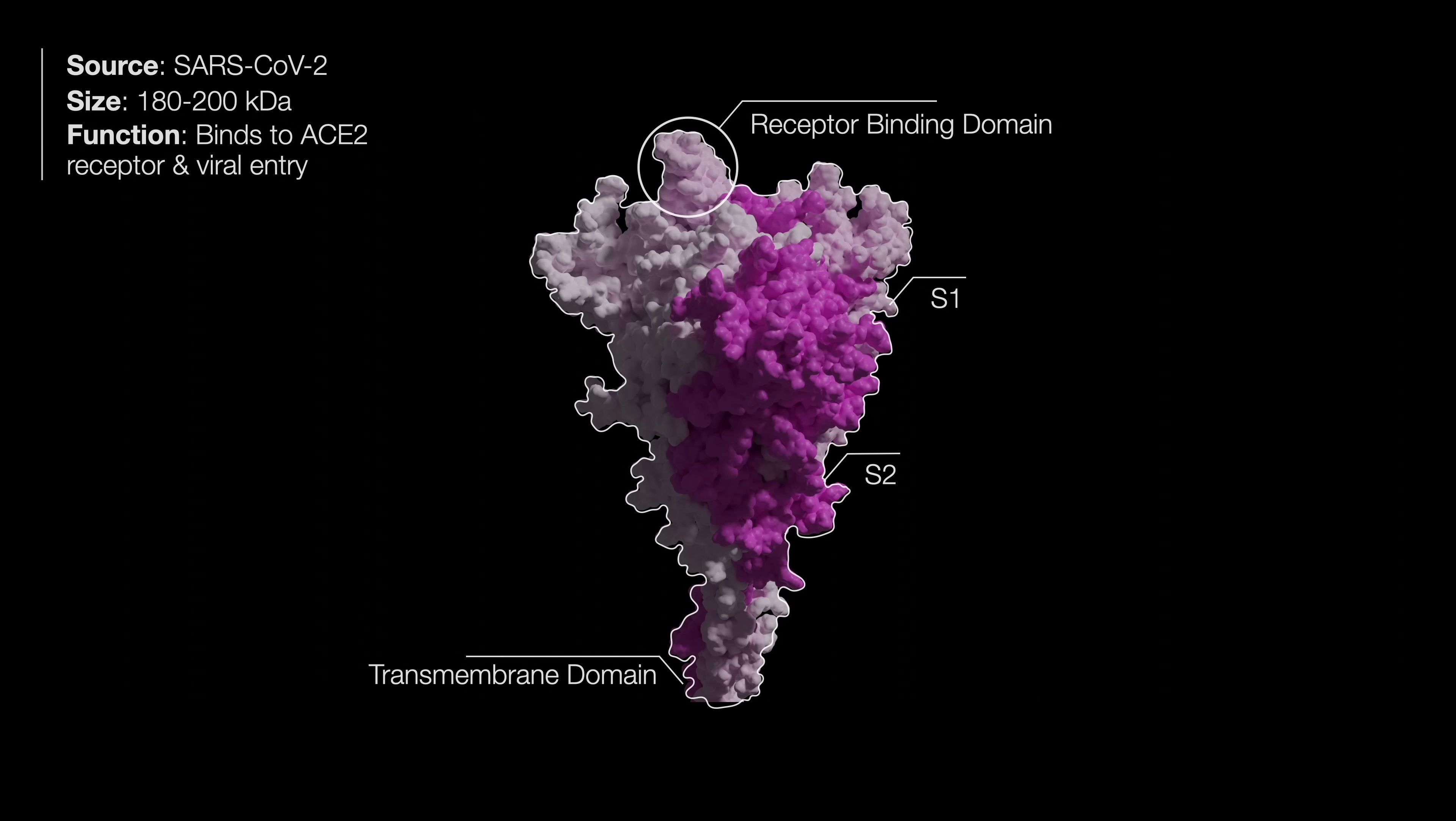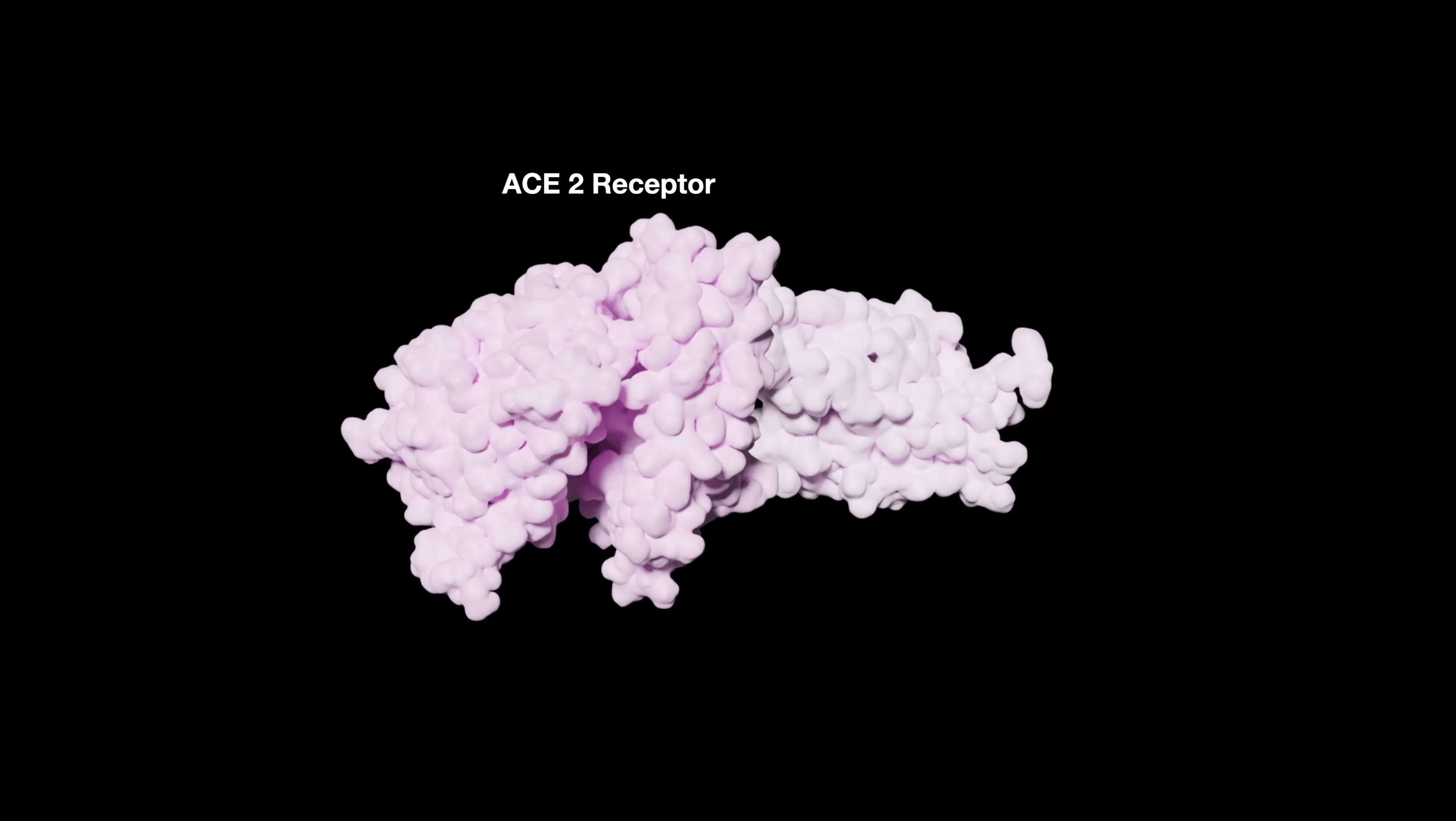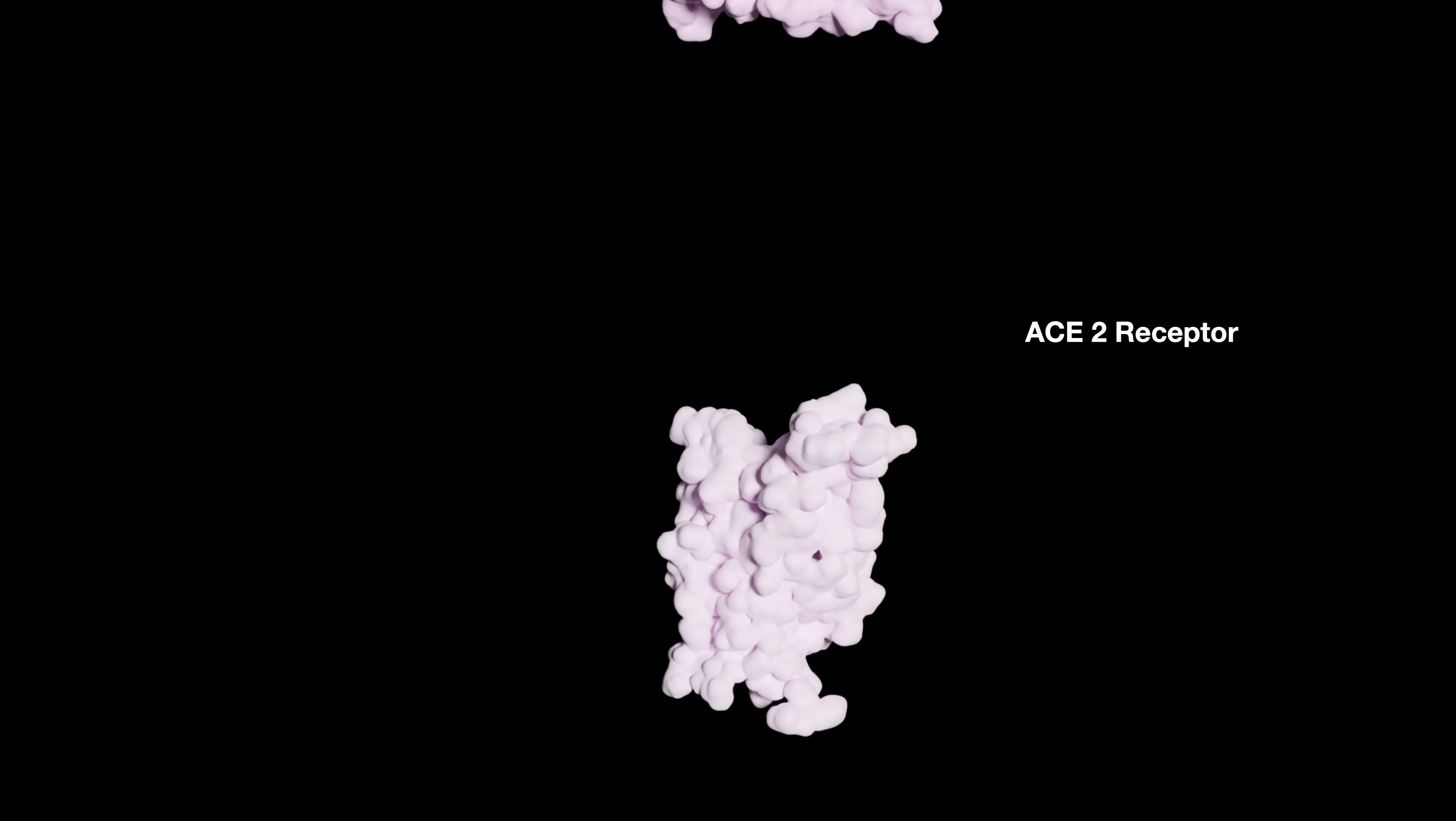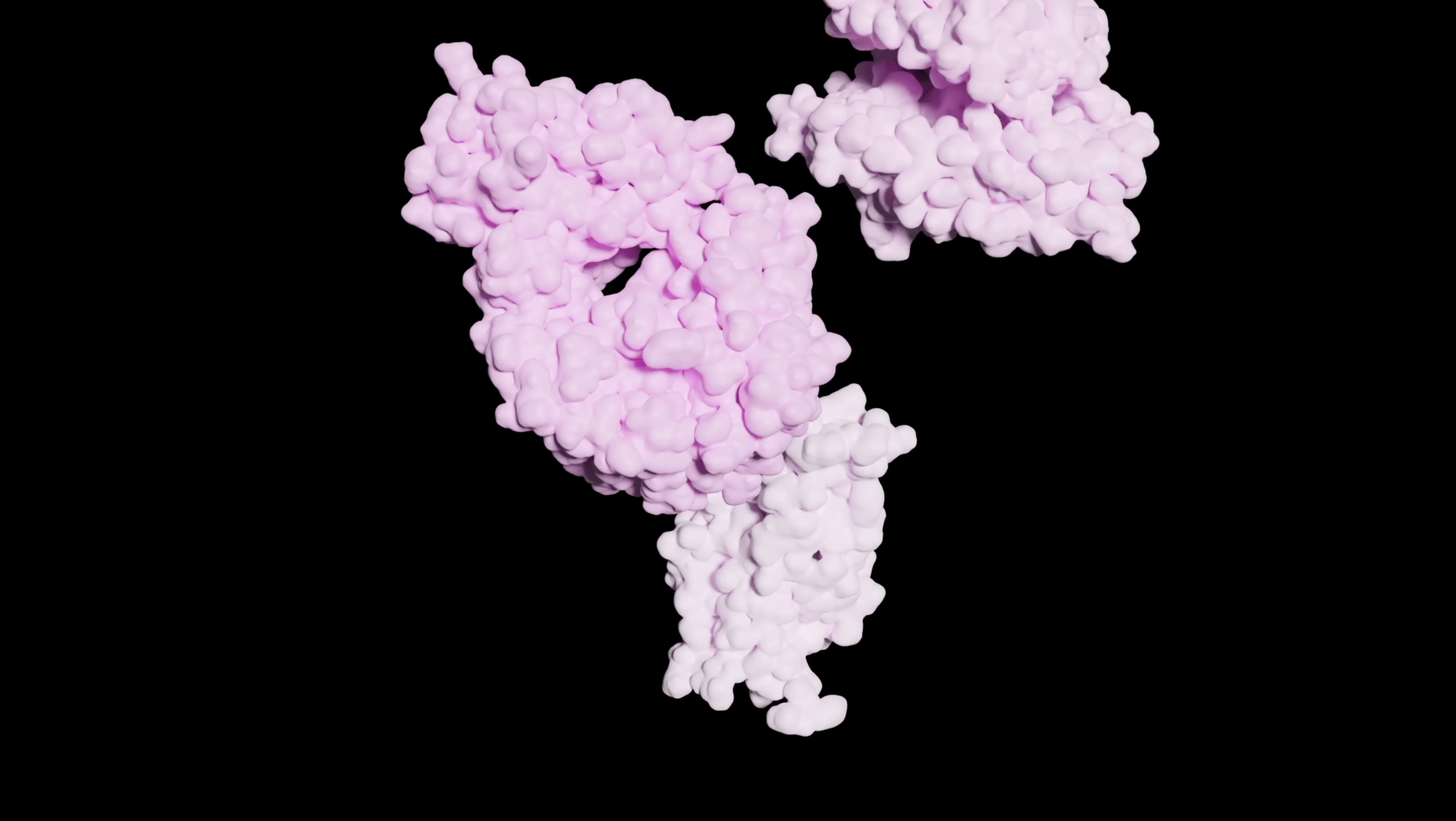We're only interested in the part of the spike protein that recognizes our keyhole, it's called the receptor binding domain, and it recognizes the ACE2 receptor. Most of the drugs that we have, which are also proteins, simply bind to the key and prevent it from unlocking the keyhole.